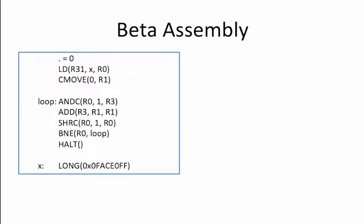Let's take a look at what this code is doing. It first loads the contents of address x into R0. So R0 equals 0x0FACE0FF or 0xFACEOFF for short. It then moves the constant 0 into R1. So R1 equals 0.